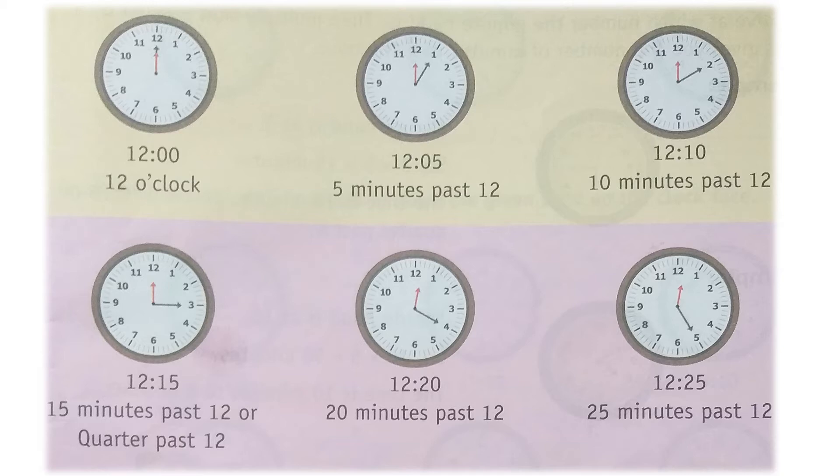In the next picture, the minute hand is at three, so it covered 15 small markings. We can say the time is 12:15, or 15 minutes past 12 — or we can say quarter past 12.